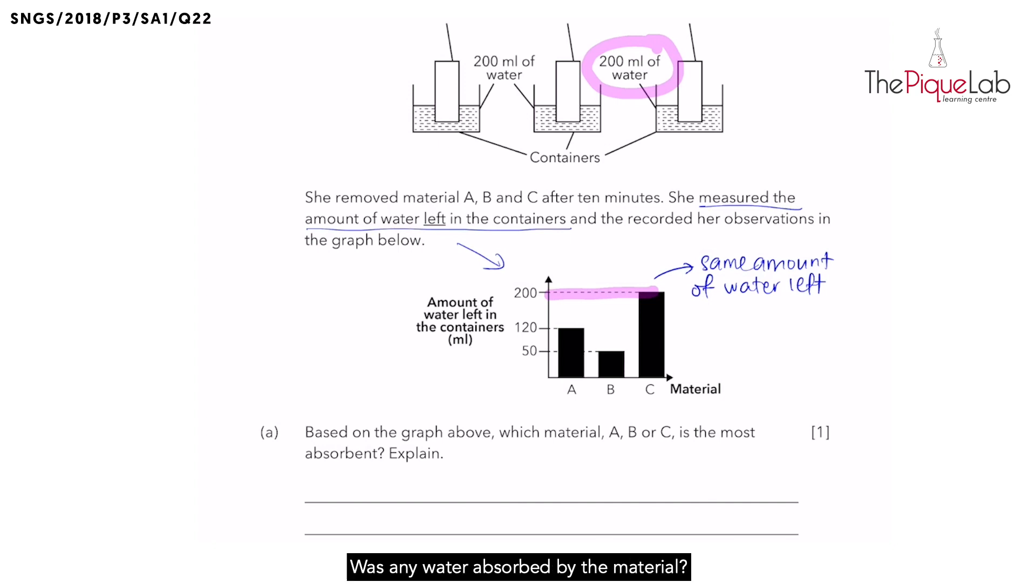What does that tell us? Was any water absorbed by the material? No. No water was absorbed by material C. No water absorbed. And therefore, we know that material C is not absorbent. Hence, it is waterproof.